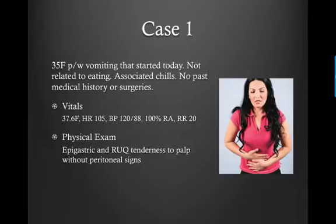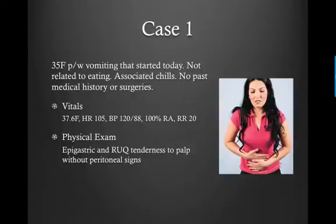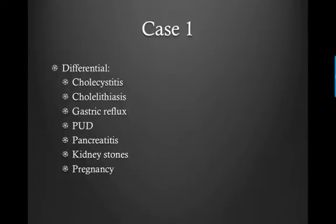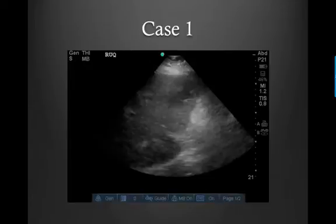Here's our case: a 35-year-old female presenting with vomiting that started today, with no really associated symptoms and no past medical or surgical history. Her vitals are significant for a mildly elevated heart rate at 105; blood pressure looks normal and she's afebrile. On physical exam, she had epigastric and right upper quadrant tenderness to palpation, but no peritoneal signs. The differential is pretty broad: cholecystitis, cholelithiasis, gastric reflux, peptic ulcer disease, pancreatitis, kidney stones, pregnancy. So you decide to take your ultrasound into the room.